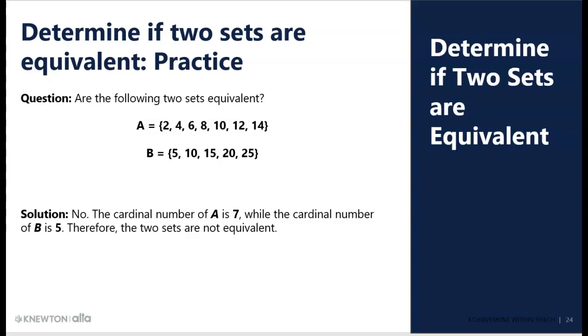So, again, are the following two sets equivalent? I count 1, 2, 3, 4, 5, 6, 7 in A, and 1, 2, 3, 4, 5 in B, or I could look for one-to-one correspondence. I have a couple left over. So if there's anything left over in either set, you don't have one-to-one correspondence. Or, more simply, 1, 2, 3, 4, 5, 6, 7 elements in A, 1, 2, 3, 4, 5 elements in B. They do not have the same cardinal number, so the sets are not equivalent.